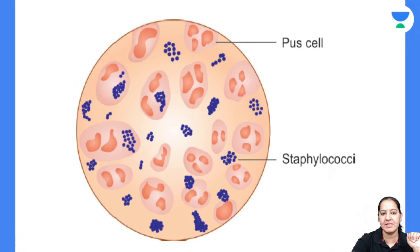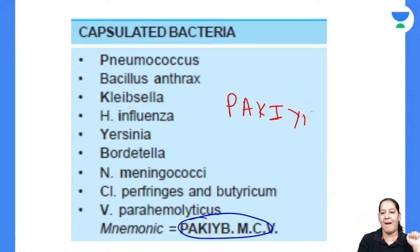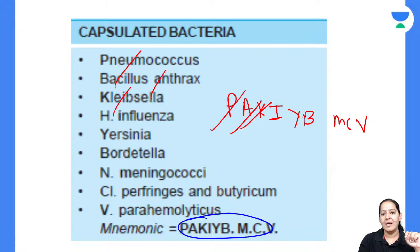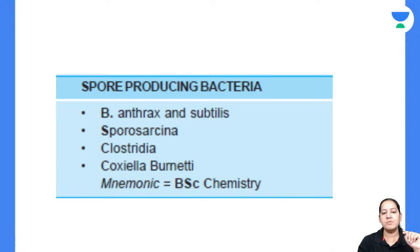The mnemonic for capsulated bacteria is PAKIYB MCV. P is Pneumococcus, A is Anthrax, K is Klebsiella, I is Influenza, Y is Yersinia, B is Bordetella, M is Meningococcus, C is Clostridium (perfringens and butyricum), and V is Vibrio parahaemolyticus. These are the nine capsulated bacteria. Since Staphylococcus is not in this mnemonic, it is a non-capsulated bacteria.